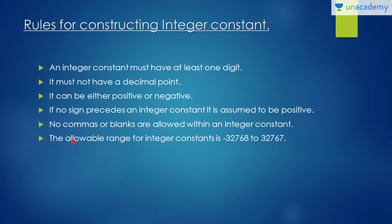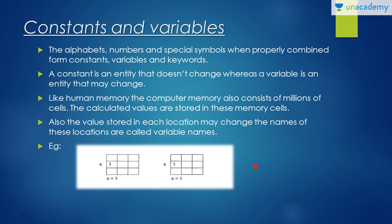The allowable range for an integer constant is -32,768 to +32,767. You don't need to memorize this, just read it.